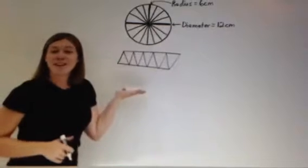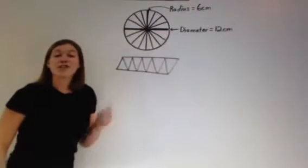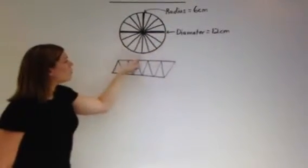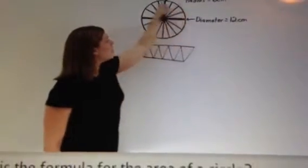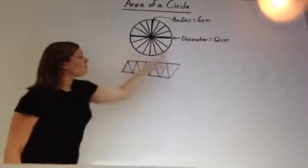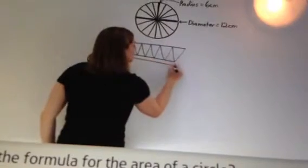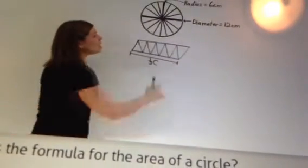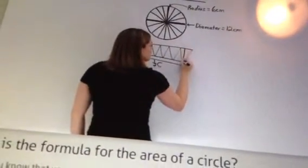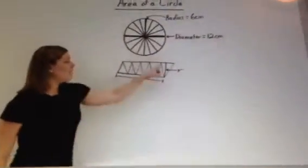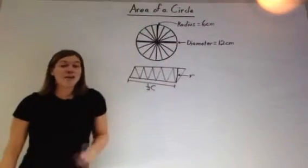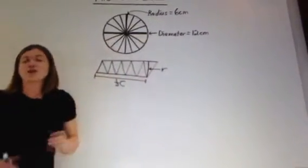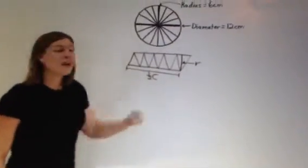Now look — we have a parallelogram from our circle. Let's label some pieces. The bottom half is a curve that is actually half of the circumference, because the circumference is the distance around the total circle and we cut it in half. That bottom curve became the bottom line of the parallelogram, so the length of that line is one half of the circumference. Each spoke is a radius, which gives us the height of the parallelogram. The area of our circle is approximately equal to the area of this parallelogram.